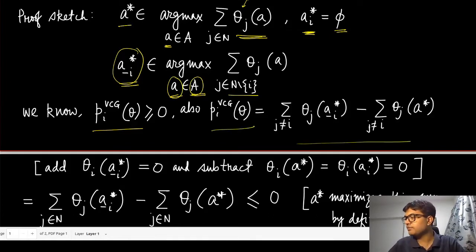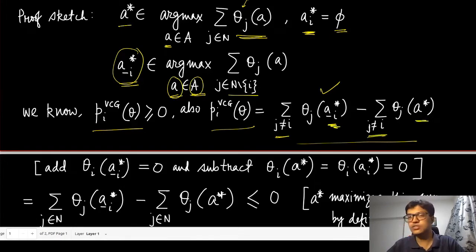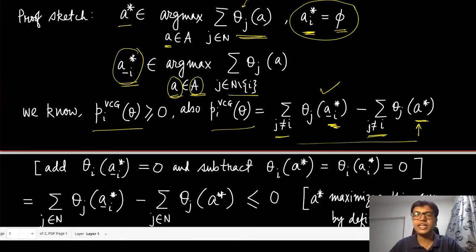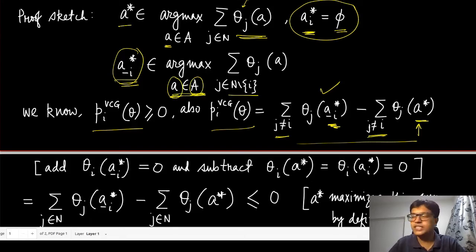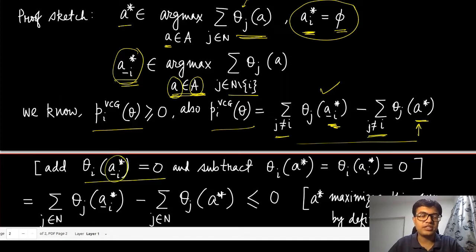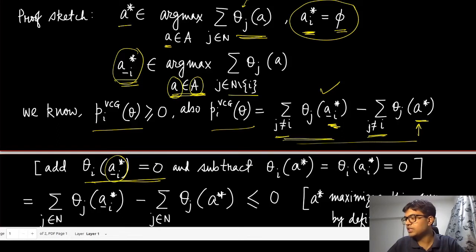Writing down pi_VCG again: the first term is the sum of valuations of all agents when agent i is not present, evaluated at a_minus_i*. The second term is the sum of all agents except agent i at the efficient allocation a*, where agent i gets nothing. Now, in the world of a_minus_i*, the i-th component of every allocation is always null, so theta_i of null equals zero. We add this term to the expression.